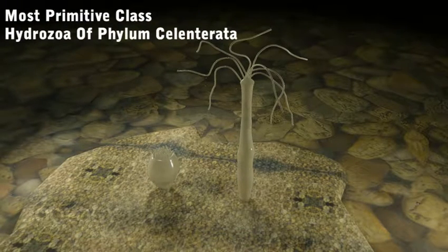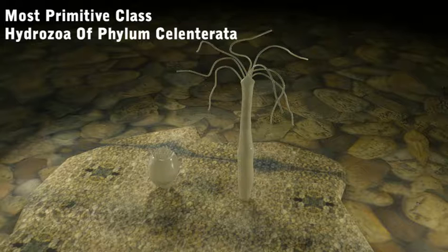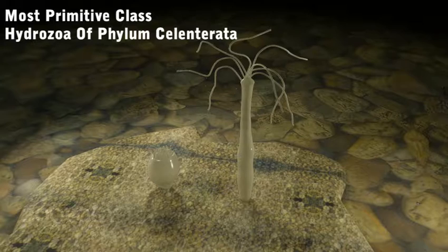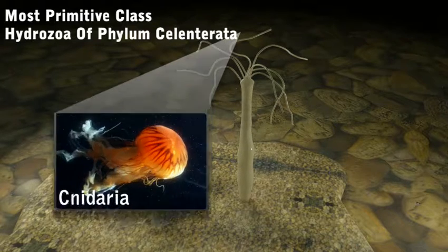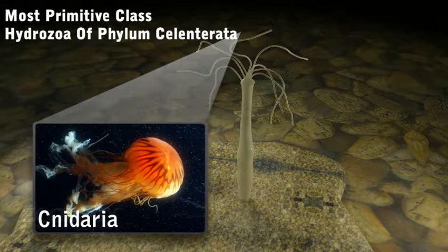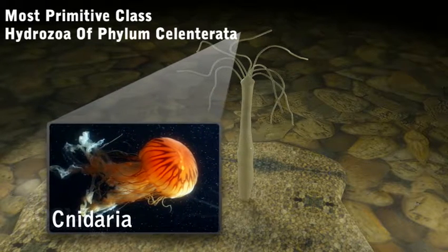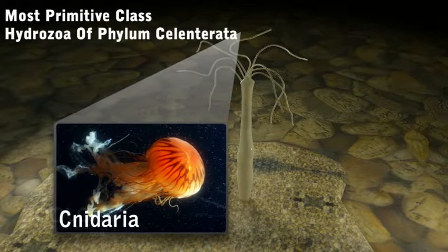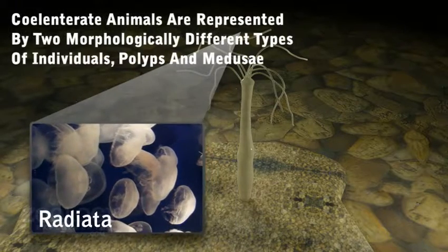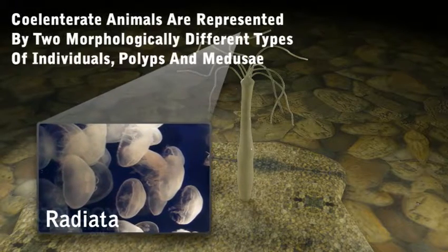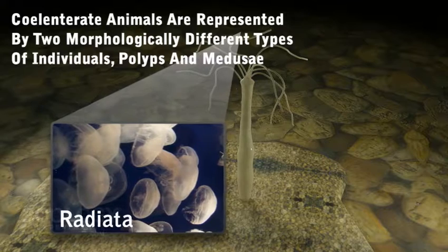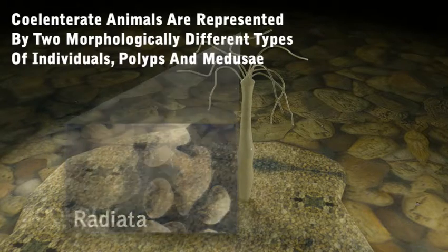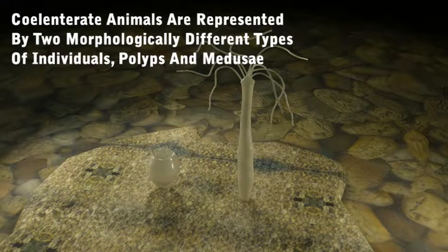Coelenterata is the phylum of acoelomate and radially symmetrical lower invertebrates. They are also called cnidarians. Coelenterata are represented by two morphologically different types of individuals: polyps and medusae.